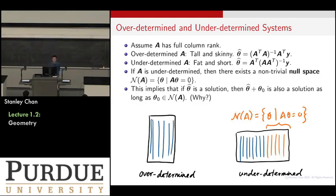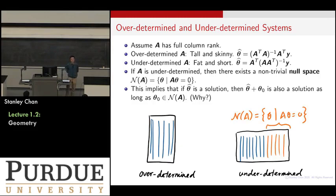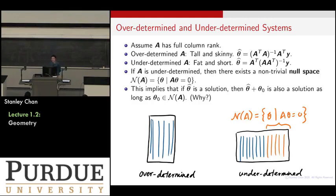Let's talk about overdetermined and underdetermined systems. First assume A has full column rank. One case is the overdetermined system — a tall and skinny matrix — where the solution is (A-transpose A)^{-1} A-transpose Y. The other is the underdetermined system — a fat matrix — where you shuffle the transpose and inverse to get a different formula. These are two different things.